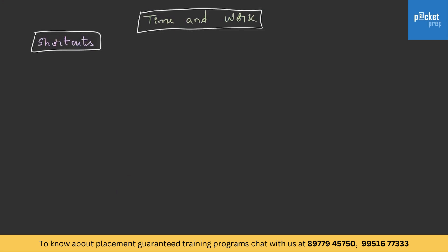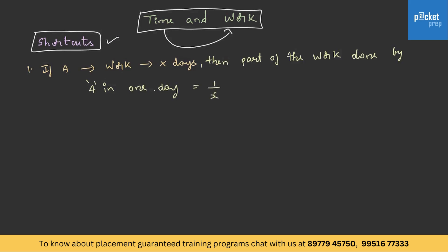In this concept we will understand the time taken to finish a work. Let's understand a few shortcuts. If A finishes a work in x days, then the part of the work done by A in 1 day will be 1 by x. If he takes x days to finish the work, then the part of the work done in 1 day will be 1 by x. So if you know the part of the work done in 1 day, you can understand in how many days he will finish the work.